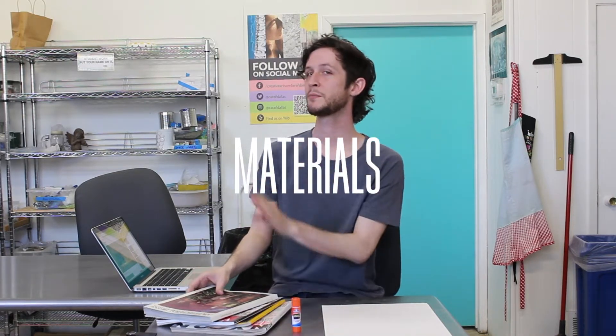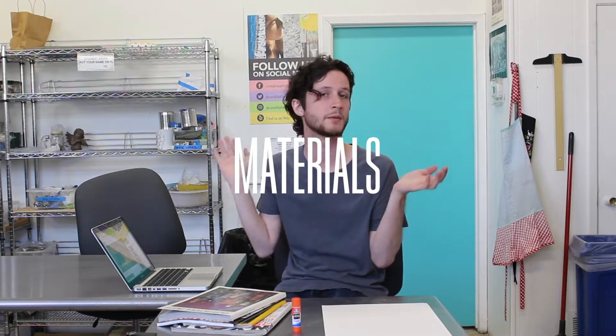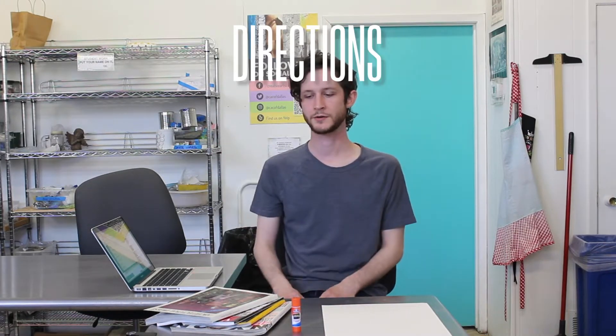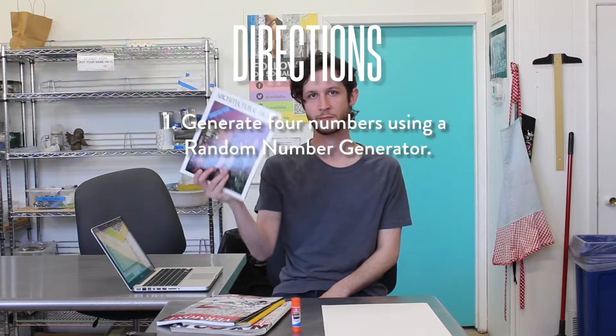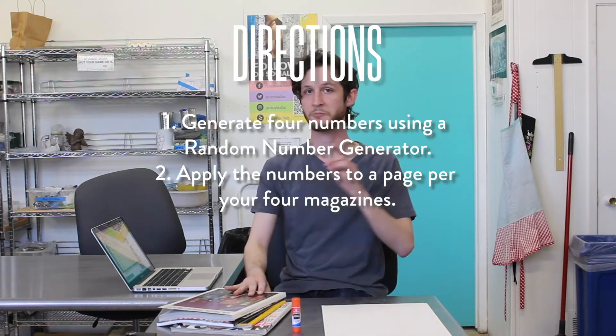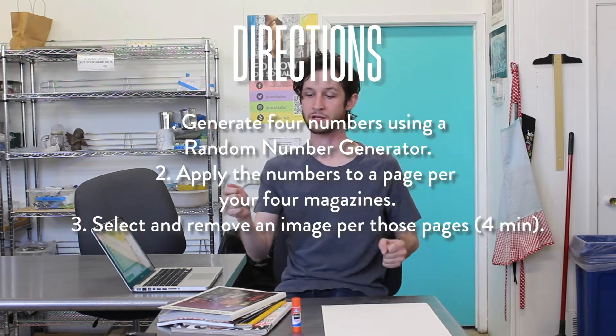Also you'll need a random number generator. You can go to Google to find a random number generator. What we're going to do is we're going to generate four random numbers for each of your magazines, take that page number, and use an image from that page. So let's get our numbers.